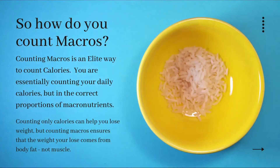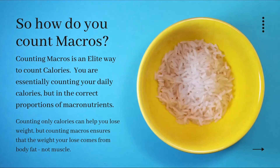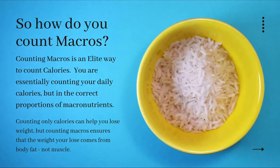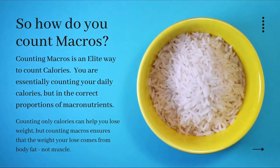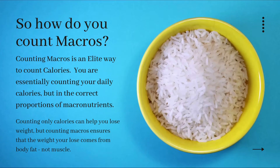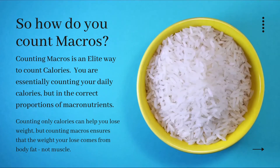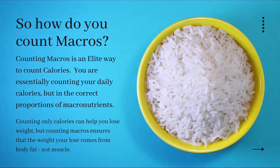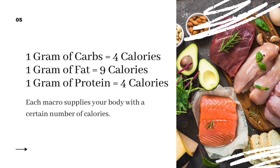Counting macros is an elite form of counting calories. You're essentially counting calories, but in the right proportions of macronutrients. Remember, in order to lose weight, we must be in a calorie deficit. But we want to make sure the weight that we're losing is coming from body fat and not muscle. Counting macros is how you achieve that.